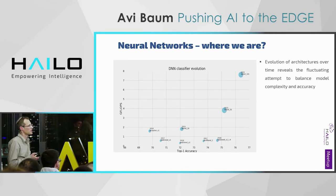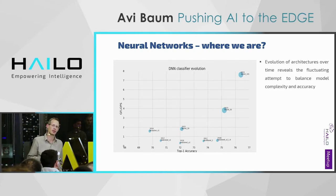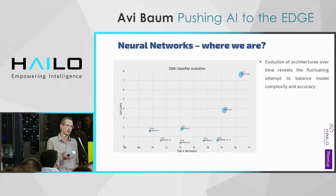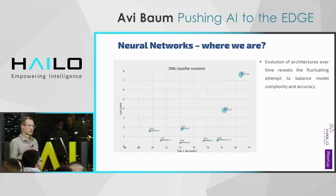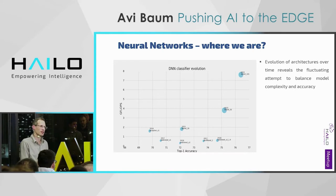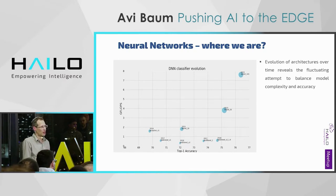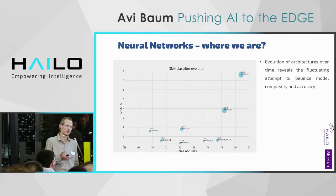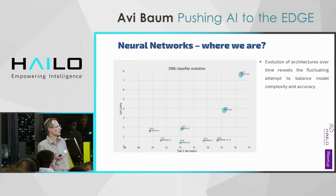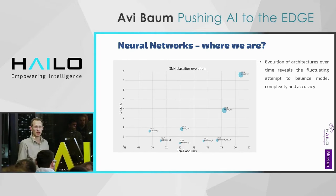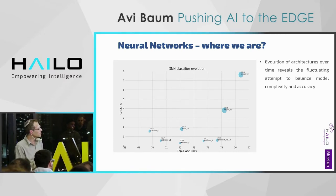What's interesting — similarly to the mobile world — is that at the beginning, when architectures could not deliver the needed performance, people designed models driven by existing architectures. What needs to happen, and what did happen in the mobile world, is that eventually the architecture overcomes the obstacles, and models are not designed to fit the architecture — rather, architectures are built to fit the models. That's what we claim needs to be done, and others in the industry are operating in the same direction.